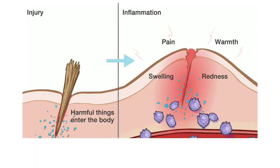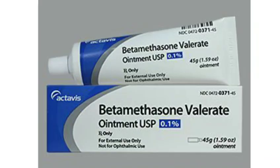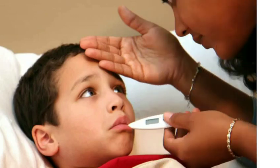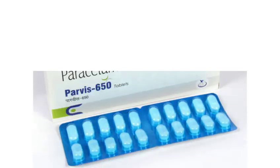Anti-inflammatory — a drug that suppresses inflammation. For example, betamethasone. Antipyretic — a drug that reduces fever. For example, paracetamol.